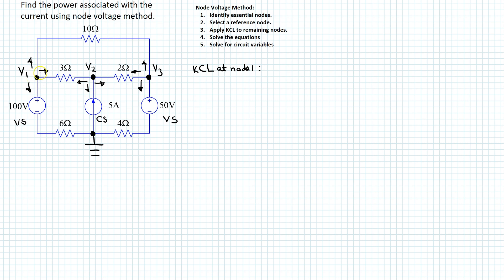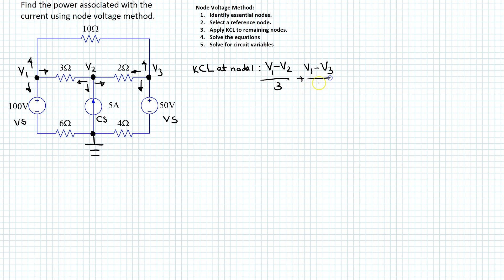At node 1, let's look at each branch current. The current through the 3-ohm resistor: following the assumed direction, the entering side is at higher potential. The voltage on one side is V1 and on the other side is V2 with respect to ground, so this branch current is (V1 − V2) / 3. The branch current through the 10-ohm resistor will be (V1 − V3) / 10.